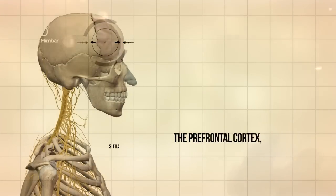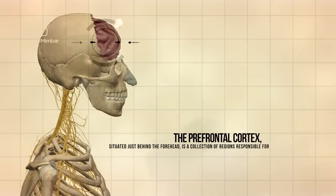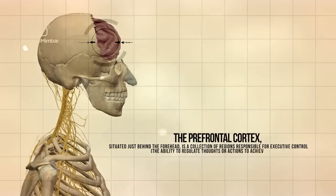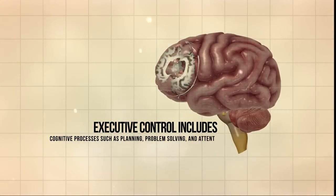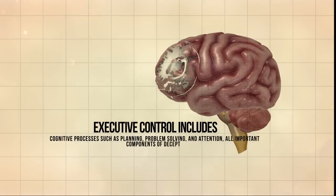The prefrontal cortex, situated just behind the forehead, is a collection of regions responsible for executive control, the ability to regulate thoughts or actions to achieve goals. Executive control includes cognitive processes such as planning, problem-solving, and attention, all important components of deception.